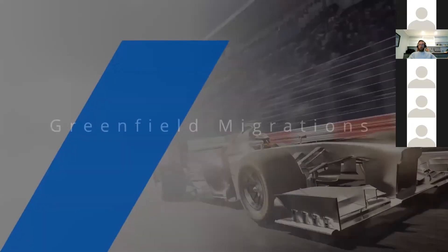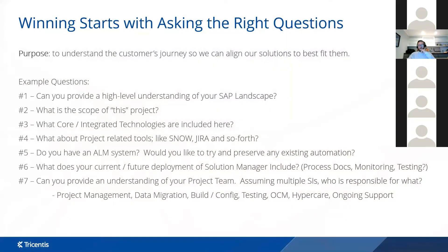In addition to global partners like IBM, Cognizant, Infosys, and Accenture, Tricentis also has local system integrators in Brazil like Averis Brazil and Ullaman, and an extensive network of partners throughout Latin America. There are dedicated enablement teams upskilling the partner ecosystem on the Tricentis message and tool set, and Tricentis skills are now starting to appear on resumes on large SAP projects.